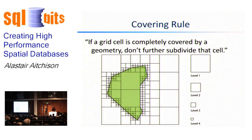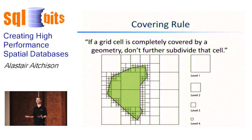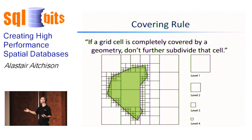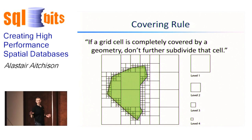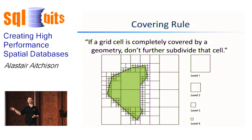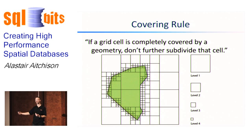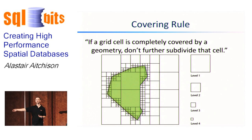The covering rule states: if a grid cell is completely covered by a geometry, don't further subdivide that cell. Looking at the two large level one cells in the middle of the geometry — we know at level one alone that the whole of those cells has been intersected by the polygon. Therefore, by implication, every level two, three, and four cell within them must also be totally covered. It adds no more information to store those deeper cells, so we just store the level one cell and note it as totally covered.